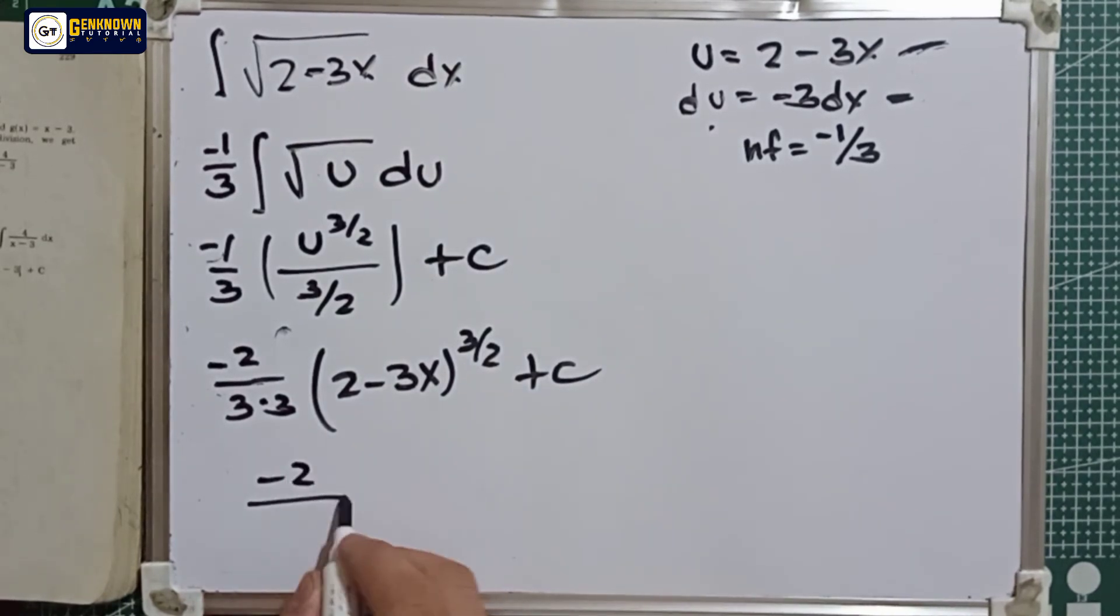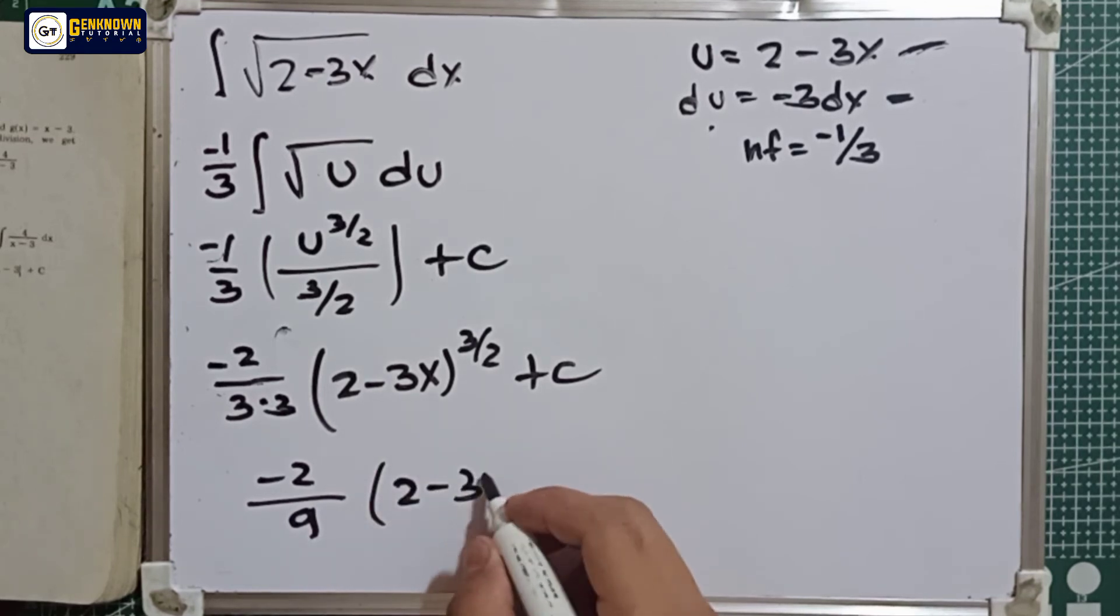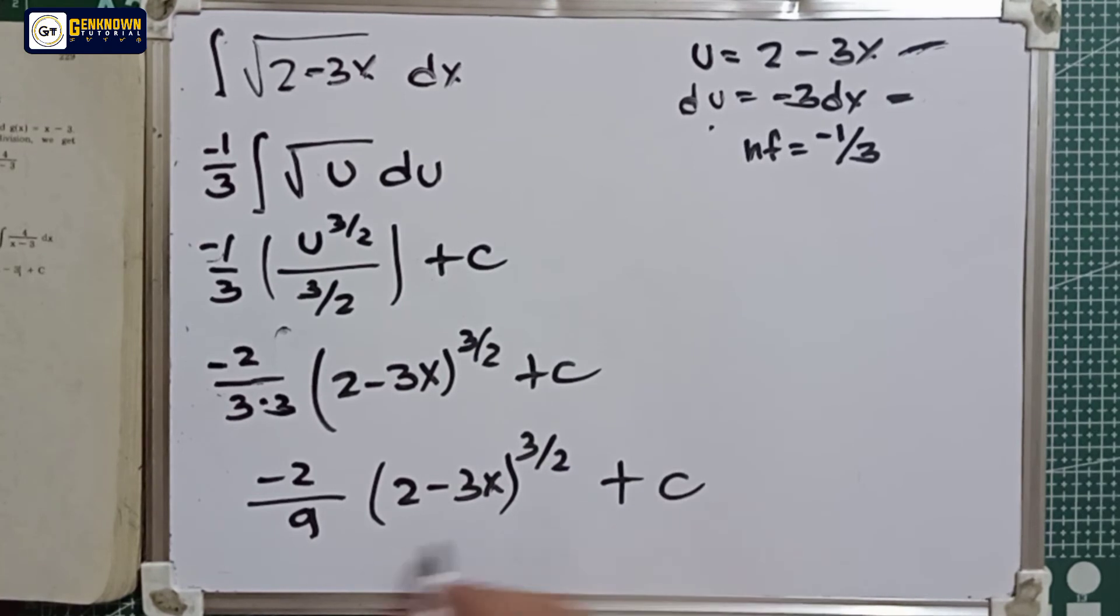So the final answer is equal to negative 2 over 9 multiply by 2 minus 3x raised to 3 over 2 plus the constant. Ito na ang final answer for number 1.